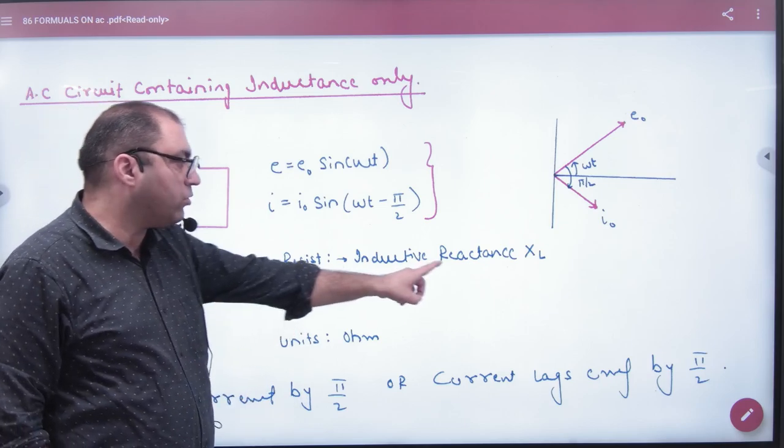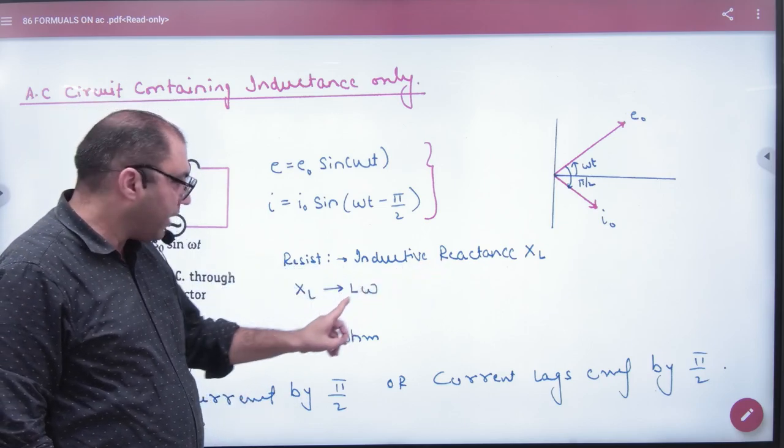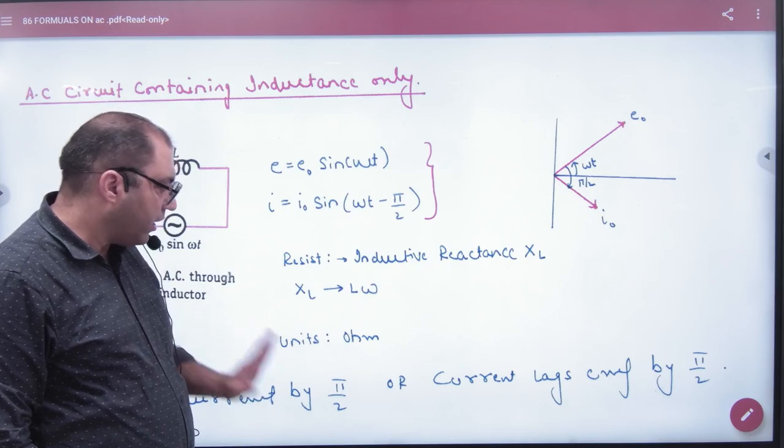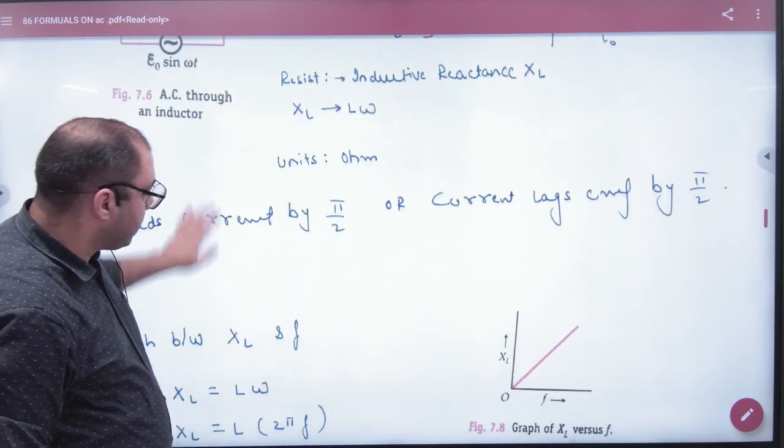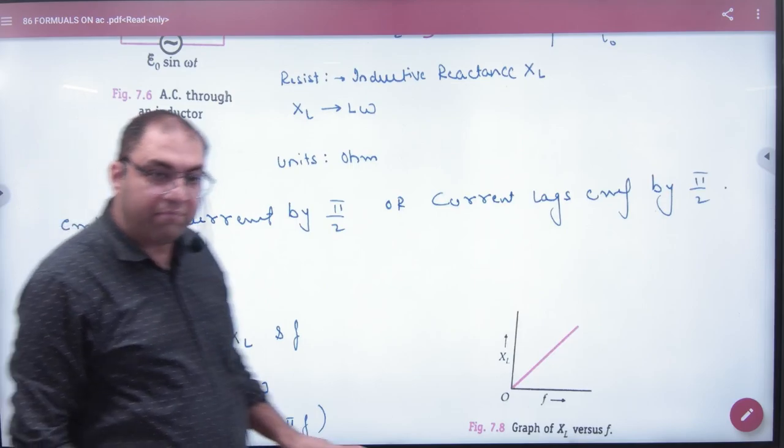And what does this resistance mean? Inductive reactance XL. What is the formula? L omega. So an important question that we have in the paper, it says graph plot or mark it: XL and frequency.